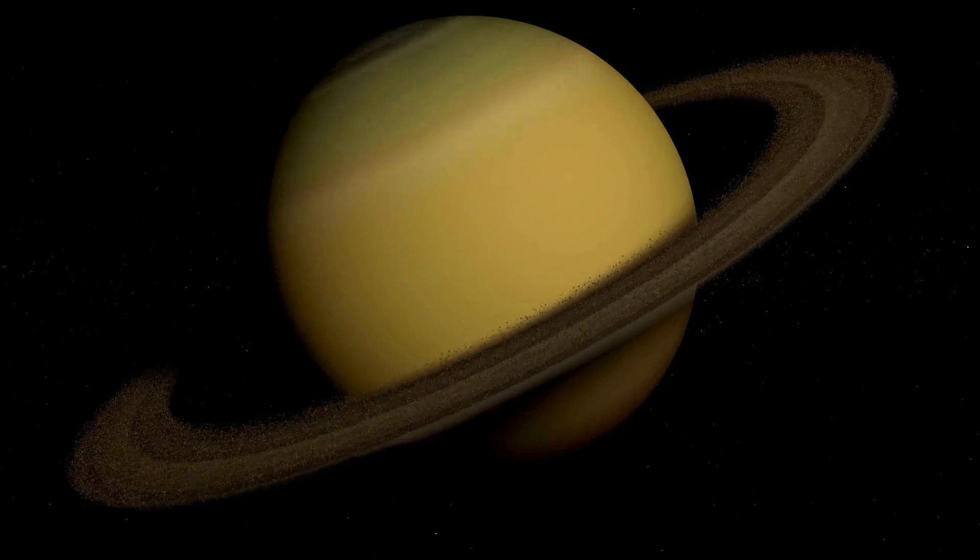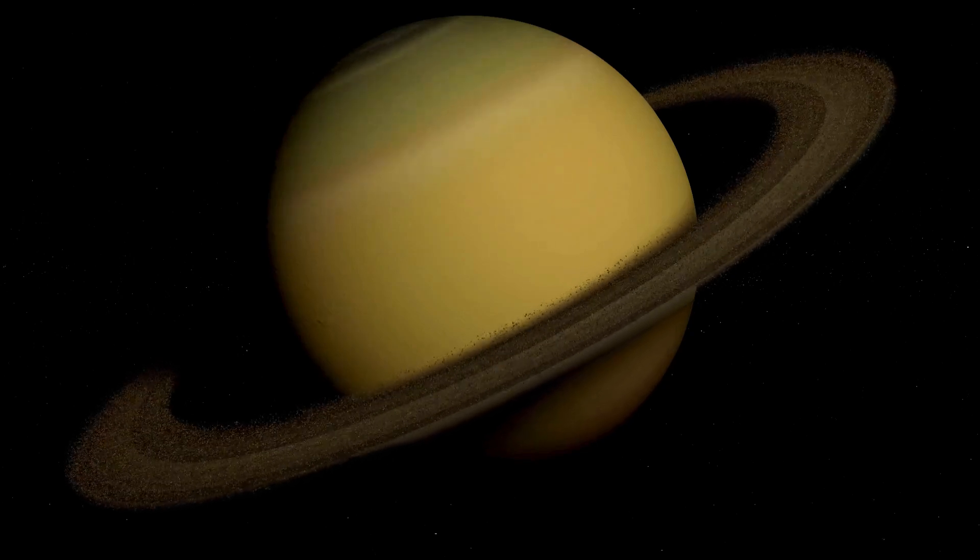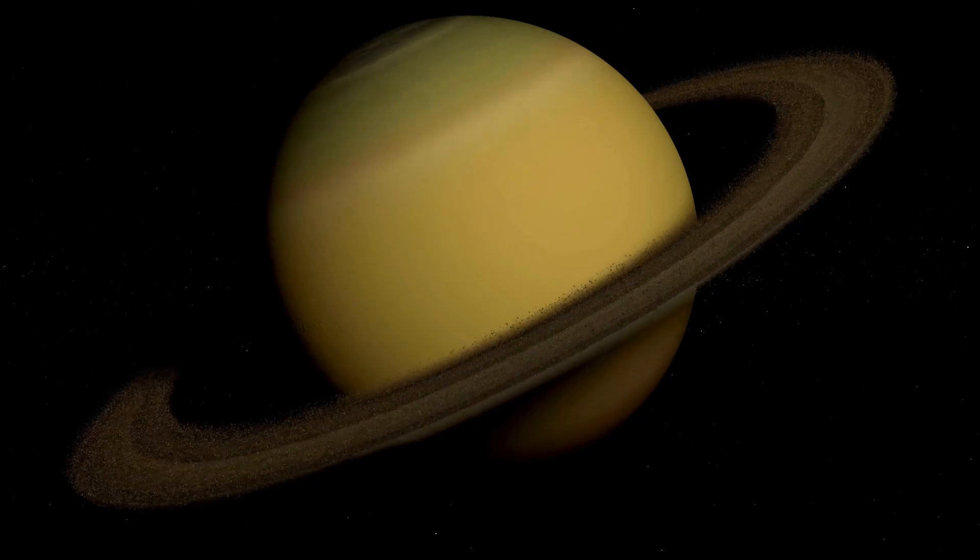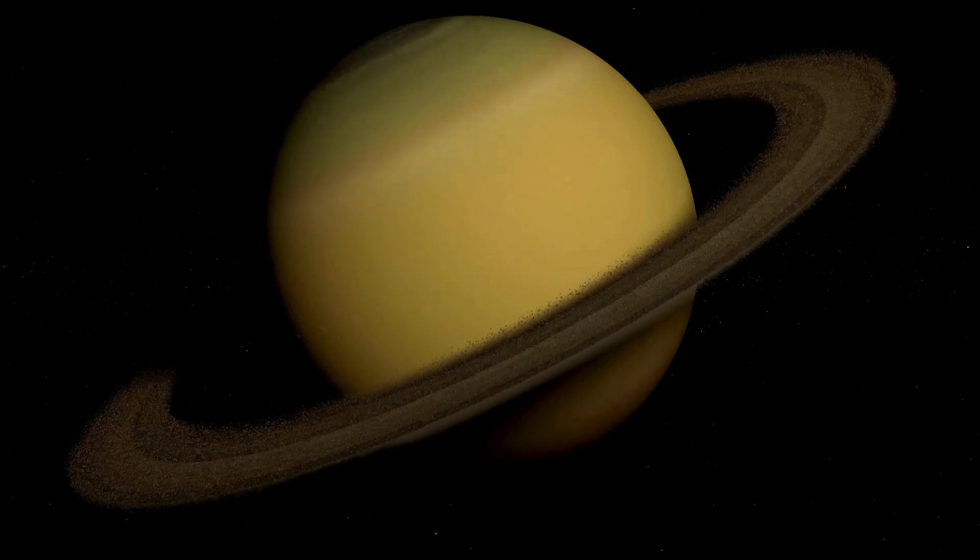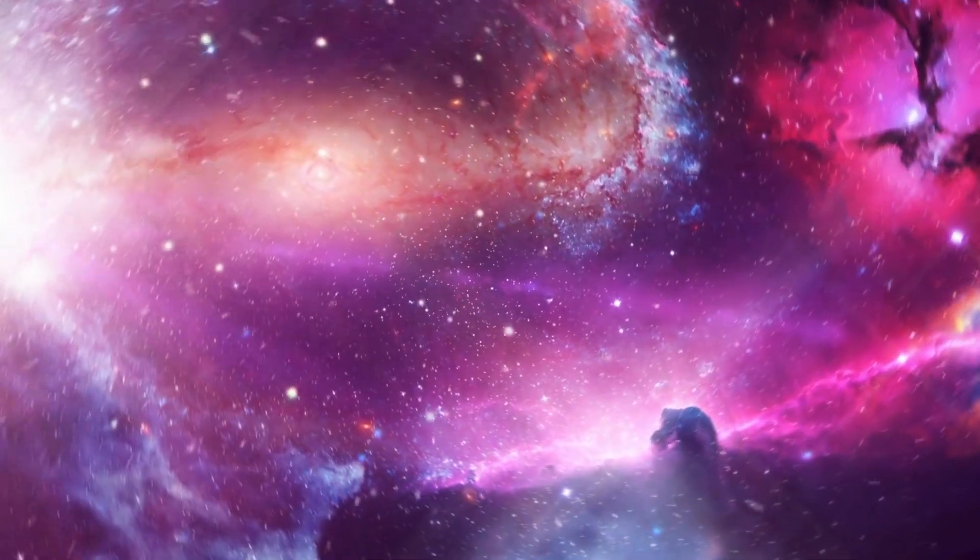The dwarf planet Pluto, situated at the farthest reaches of our solar system, is enveloped by hundreds of thousands of icy celestial bodies and asteroids within the Kuiper Belt, a vast region of space beyond Neptune.